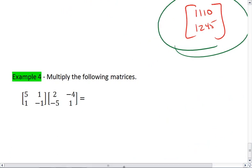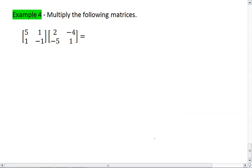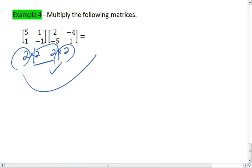Alright, for this last one, try to work it out on your own first. Once you're done, resume the video and you can check your solution. Okay, we have a 2 by 2 multiplied by a 2 by 2 matrix. So yes, we can multiply them together, and our resulting matrix should also be a 2 by 2.